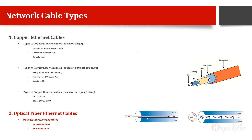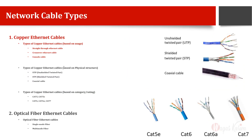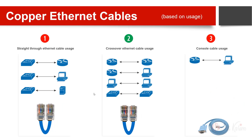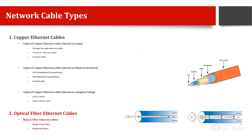To summarize: there are two main types — copper and optical fiber. Inside copper, three classifications: by usage (straight-through, crossover, console), by physical structure (UTP, STP, coaxial), and by category or rating (Cat5, Cat6, Cat7, and onwards). Optical fiber has two types: single-mode and multi-mode. If you have any further questions, please write in the comment section.